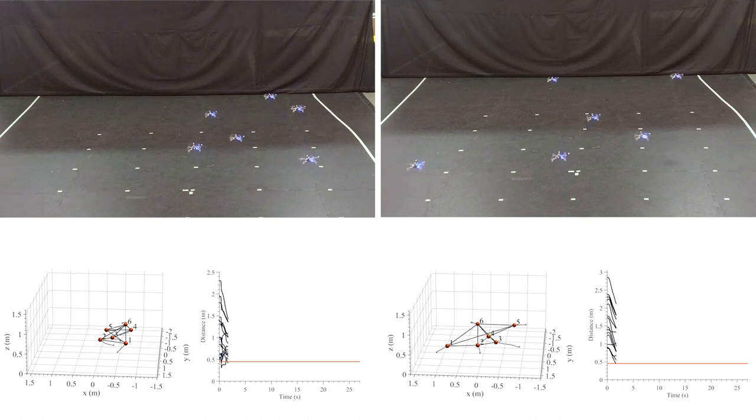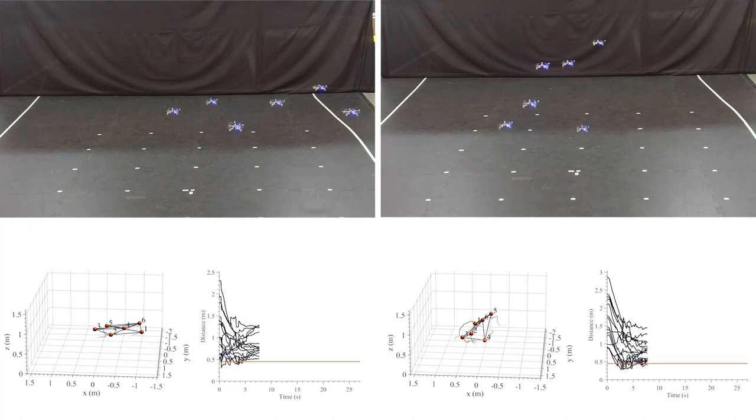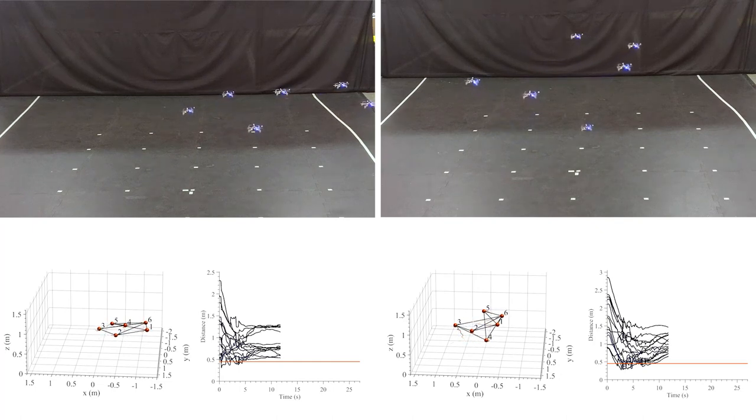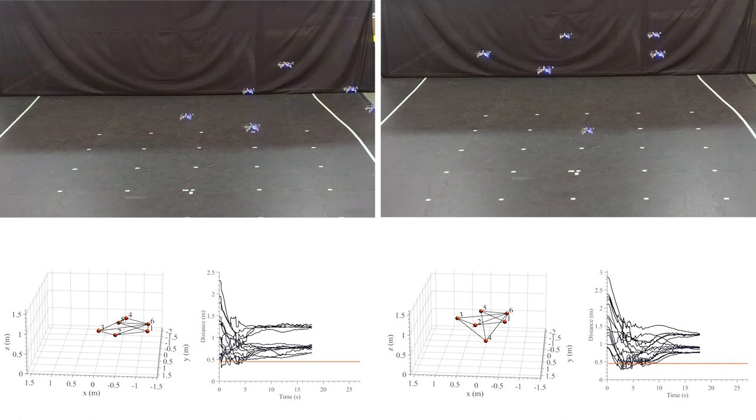In the second set of experiments, we consider a pentagonal pyramid desired formation with six agents. Since our approach is not based on global position and measurements are local and relative, the formation is achieved up to a translation and a rotation about the z-axis of the global coordinate frame. Also, the formation can be flipped along the z direction.